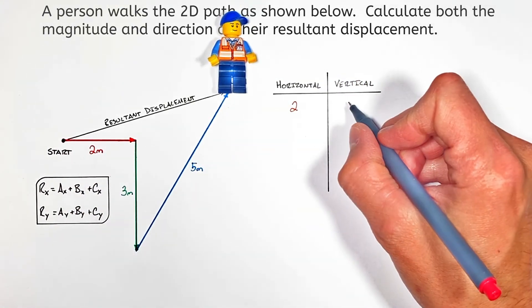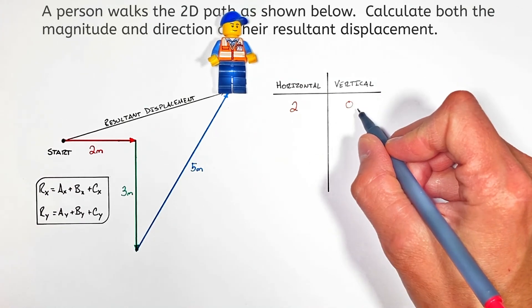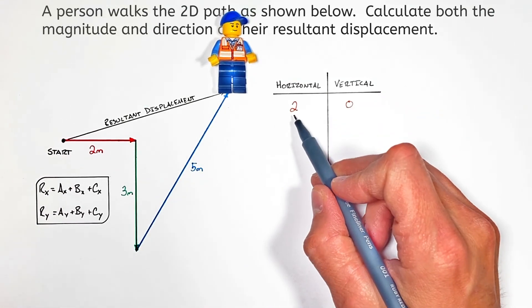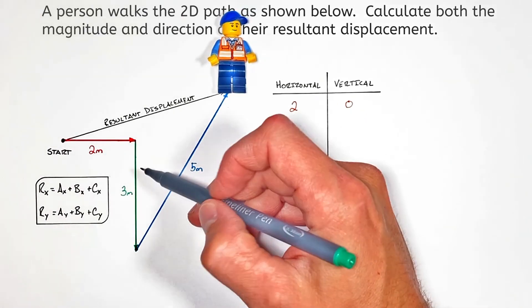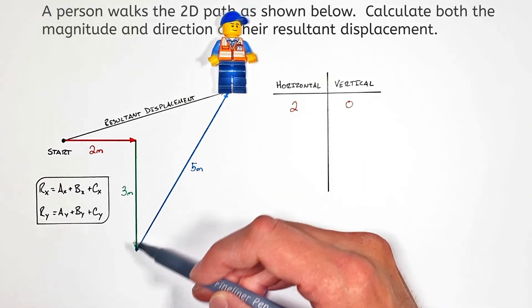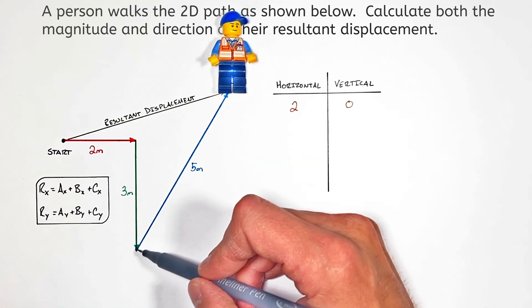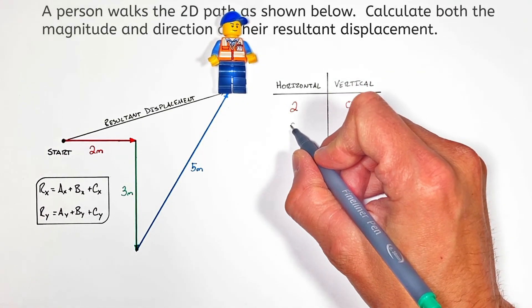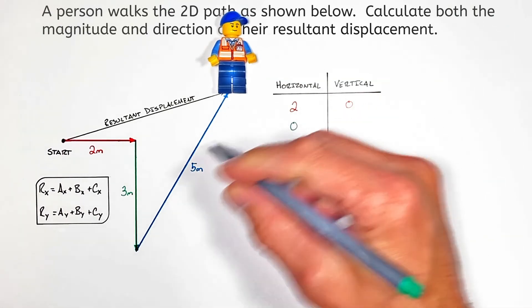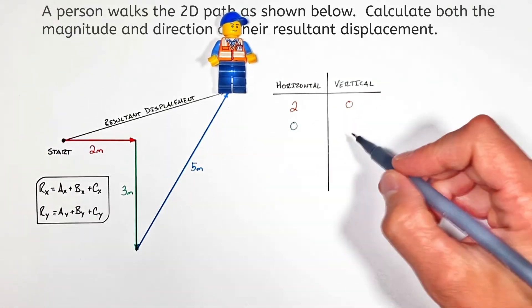There's going to be no vertical displacement, so in our horizontal column we'll put 2 and in the vertical column we'll put a zero. This three meter displacement is downward, so it doesn't have any component horizontally. In the horizontal column we're going to put zero—it doesn't at all move horizontally there.